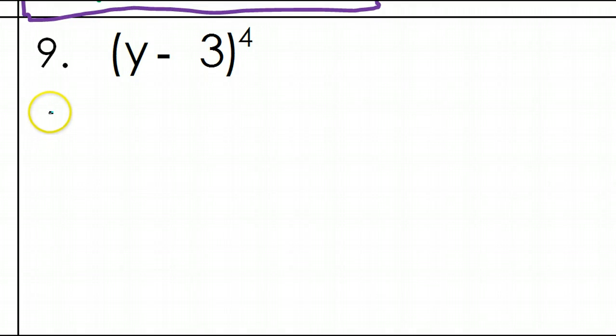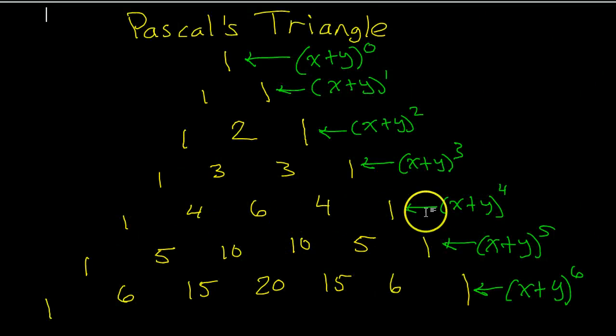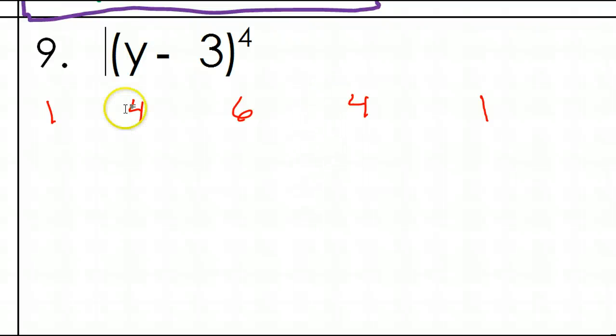Let's copy that down. Again, the coefficients were one, four, six, four, one. Let me just double check real quick. Fourth power, one, four, six, four, one. Okay. These should be the coefficients of the polynomial once I expand this.